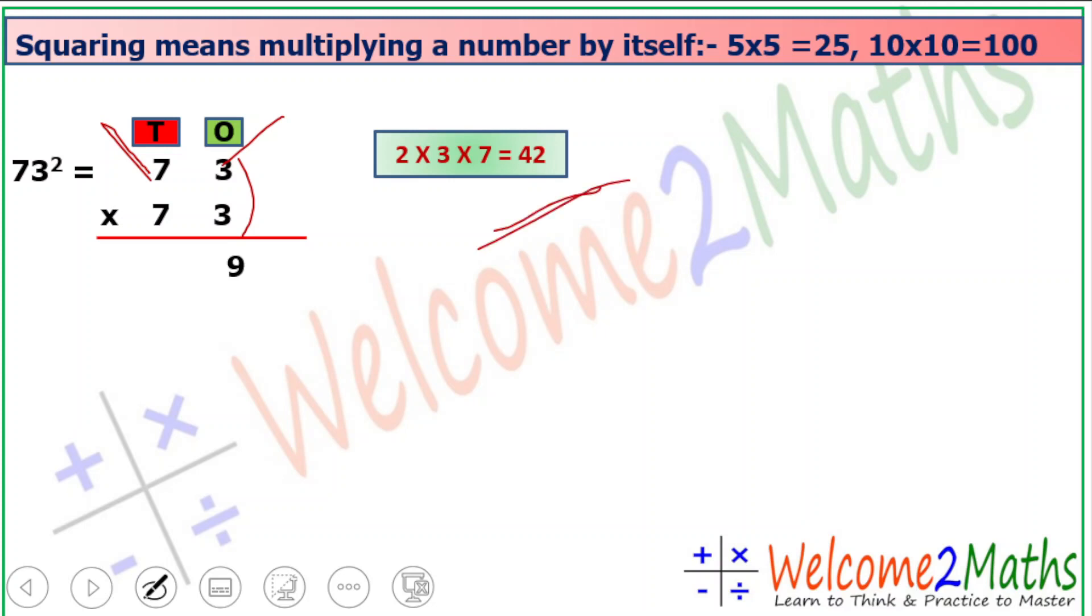But 42 is a two-digit number and we can write only a single digit at a particular place. So let's write 2, and 4 becomes carry to the next place. Now we multiply the tens place digits: 7×7=49. But we add the carry also, that is 4. So 49+4=53. This is our answer: 5329.